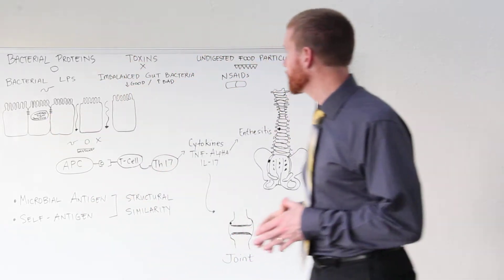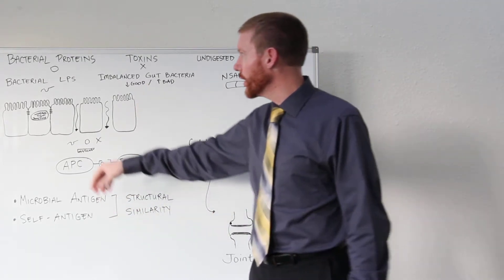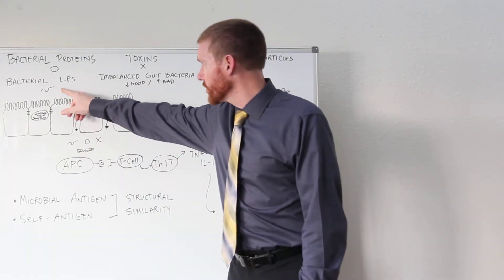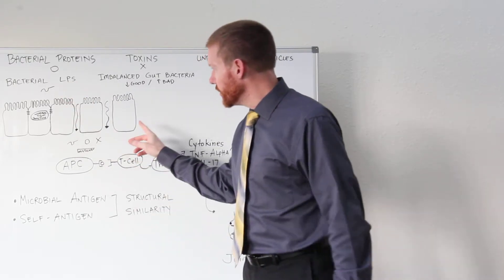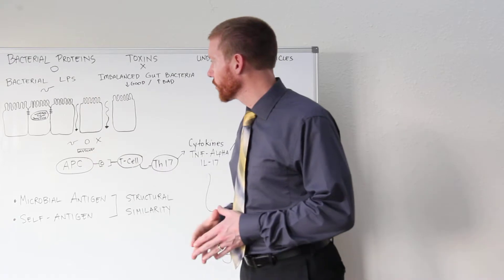bacterial proteins, toxins, undigested food particles, and imbalancing gut bacteria and bacterial toxins such as lipopolysaccharide damage the gut lining, it becomes leaky. These products can get through the gut lining,